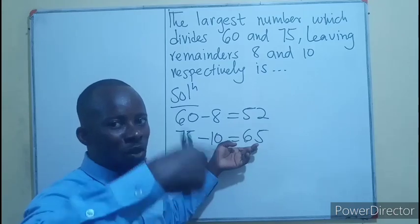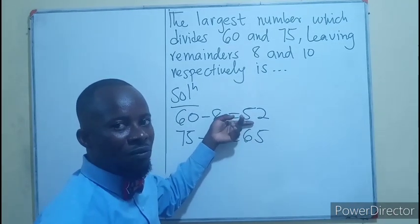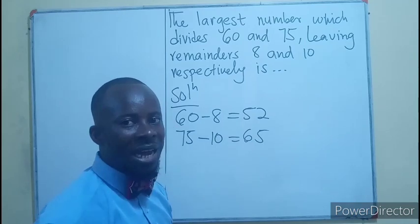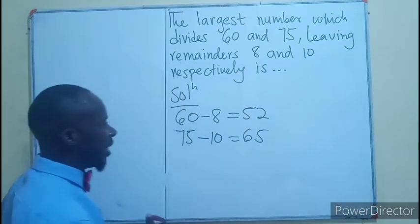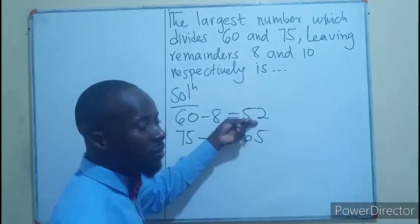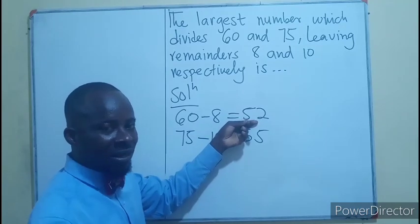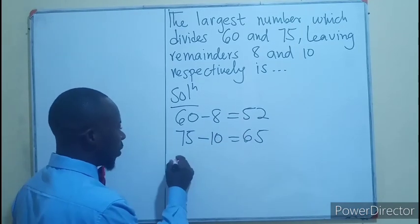There's a certain highest common factor that can divide 52 and at the same time divide 65. We can start by listing the factors, or we can also use the prime factorization.